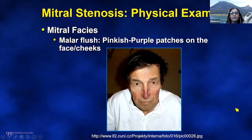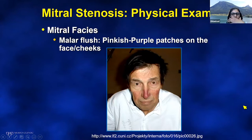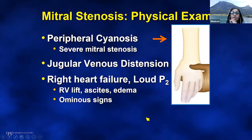The S2-opening snap interval is inversely related to the severity of mitral stenosis — the closer the opening snap gets to the second heart sound, the more severe the mitral stenosis. Other findings on physical exam include the malar flush, which almost looks like a patient with lupus: a pinkish-purplish patch on the face and cheeks. More severe mitral stenosis can give you peripheral cyanosis, though this is pretty rare to see nowadays.